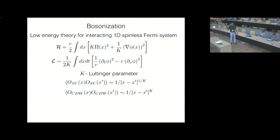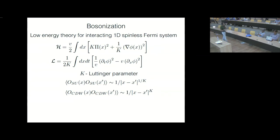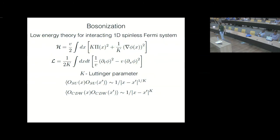You can write down a Lagrangian corresponding to the Hamiltonian, and I'll show you that the interactions are actually contained in this parameter k, called the Luttinger parameter. The upshot of having a low energy theory like this is that you can have algebraic correlations of superconductivity and charge density wave order, and if you look at the correlation functions, they both go algebraically — superconductivity with exponent 1/k and charge density wave with exponent k.